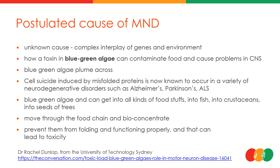There are many postulations about what causes MND — there is no direct known cause. One postulated theory involves a toxin associated with blue-green algae. Huge plumes of this algae exist in Australia, stretching across the Murray River, Murrumbidgee Rivers, the Hunter Valley, and Victoria. These algae initiate cell suicide or cell death by misfolding proteins, which are then associated with neurodegenerative disorders.